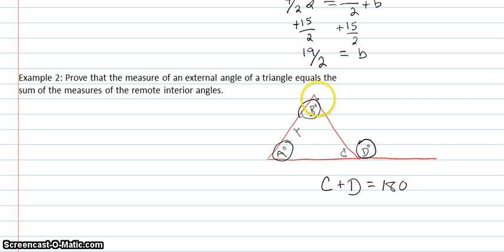And we also know that when we add all the interior angles of a triangle, that equals 180. So, I would have a plus b plus c equals 180.